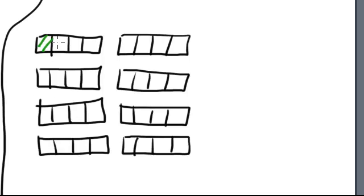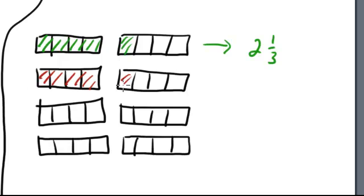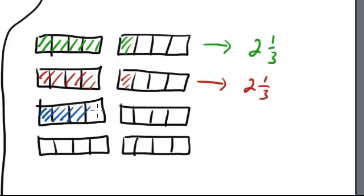I'm going to represent this first group of one whole dress and a quarter, and that takes 2 and 1 third yards. Now I'll take the next 1 and 1 quarter dress — that's a dress and a quarter — and that is 2 and 1 third yards. Here's my next one, and this is also 2 and 1 third.